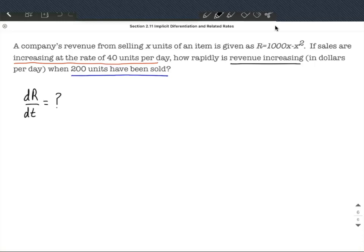When 200 units have been sold, so x represents the number of units, and in this particular case we were looking at 200 units. Alright, so x equals 200.